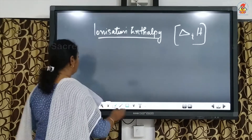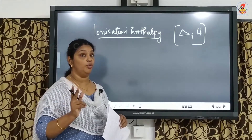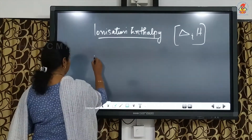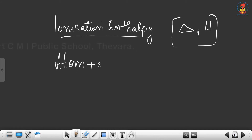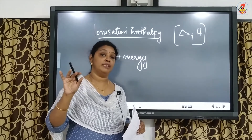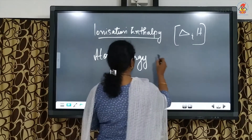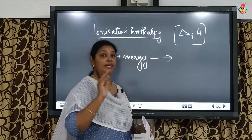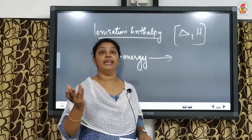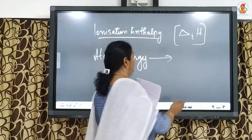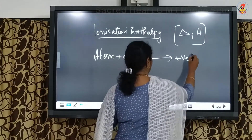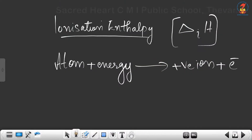We can say it is the amount of energy required to remove the most loosely bound electron from an atom. If we give energy to an atom, the electron held most loosely will be ejected out. So: atom + energy → positive ion + electron.